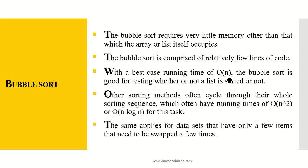Other sorting methods often cycle through their whole sorting sequence and typically have a running time of O(n²) or O(n log n). With a best-case running time of O(n), bubble sort is the time complexity reference here. The same applies for data sets that have only a few items needing to be swapped a few times, so bubble sort works best when the number of elements in the list is small.